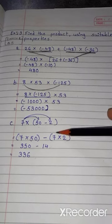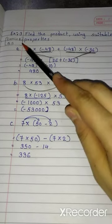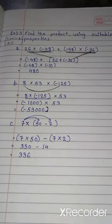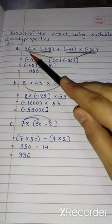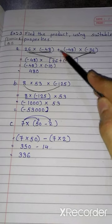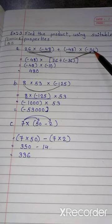These three sums I am solving from exercise 1.3 question 5. First sum is 26 into minus 48 plus minus 48 into minus 36.